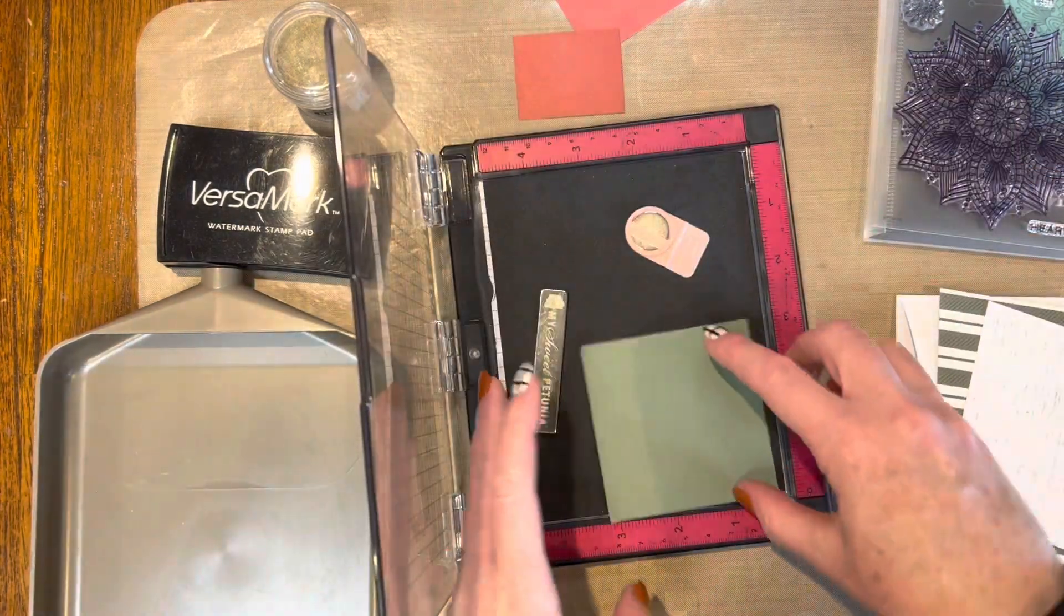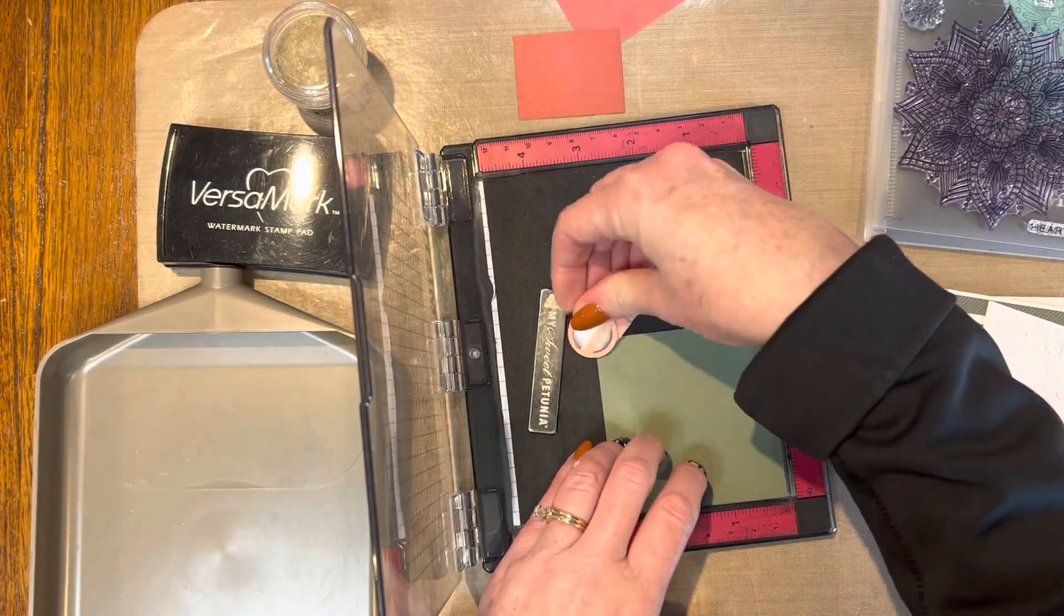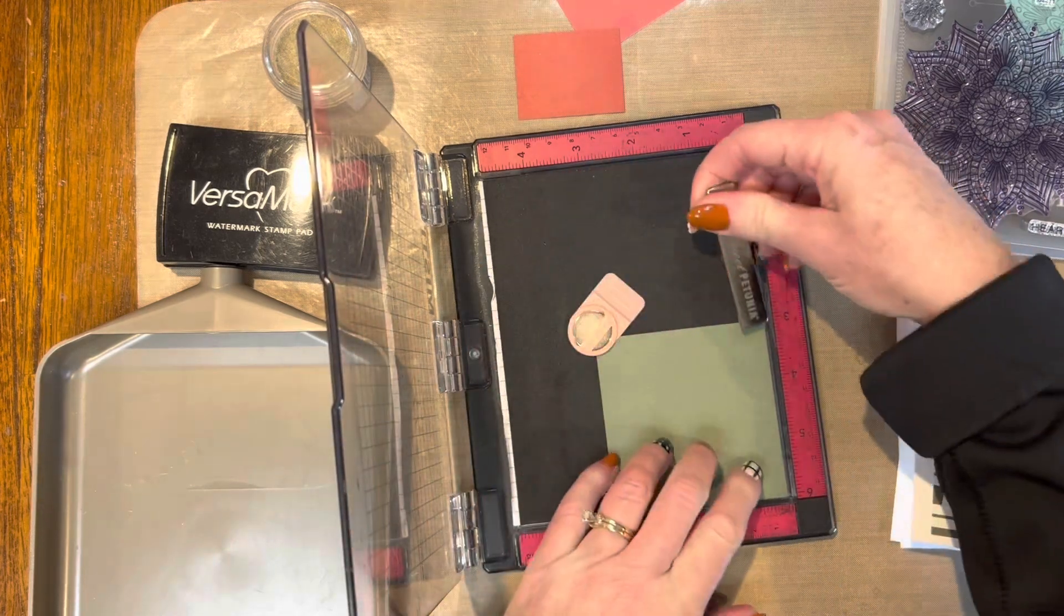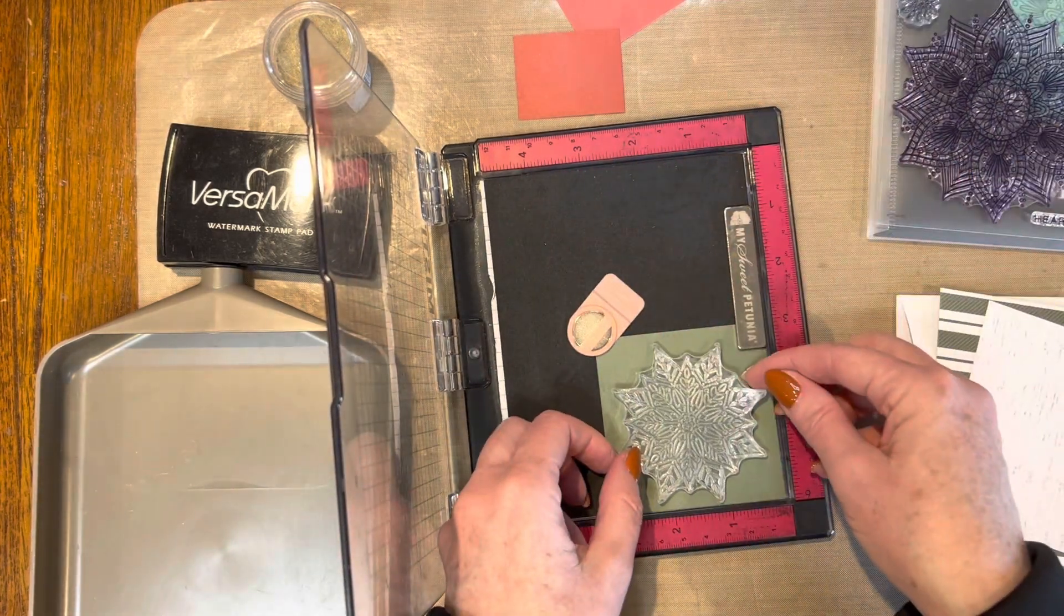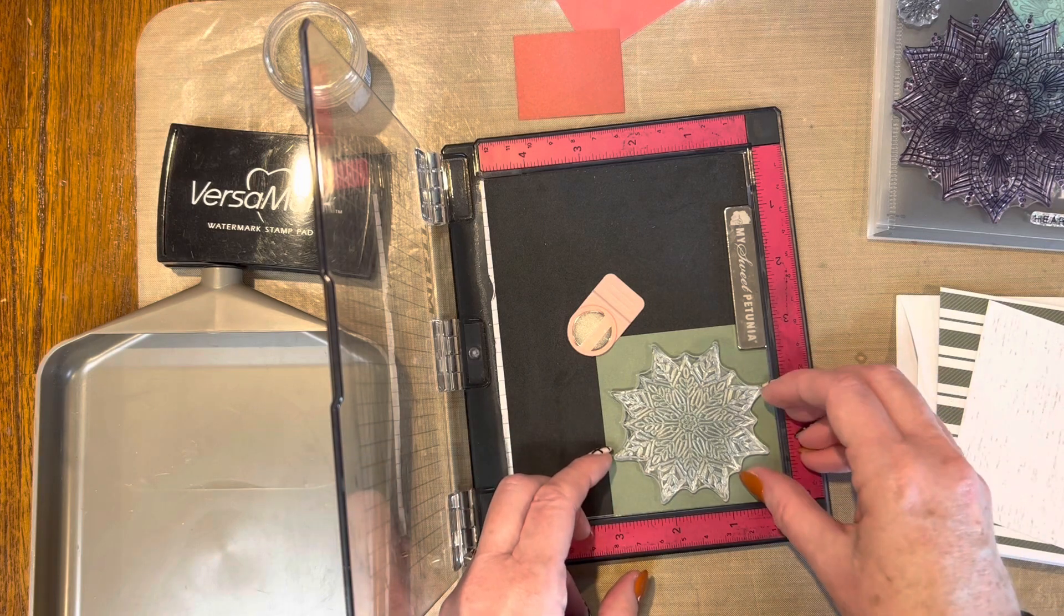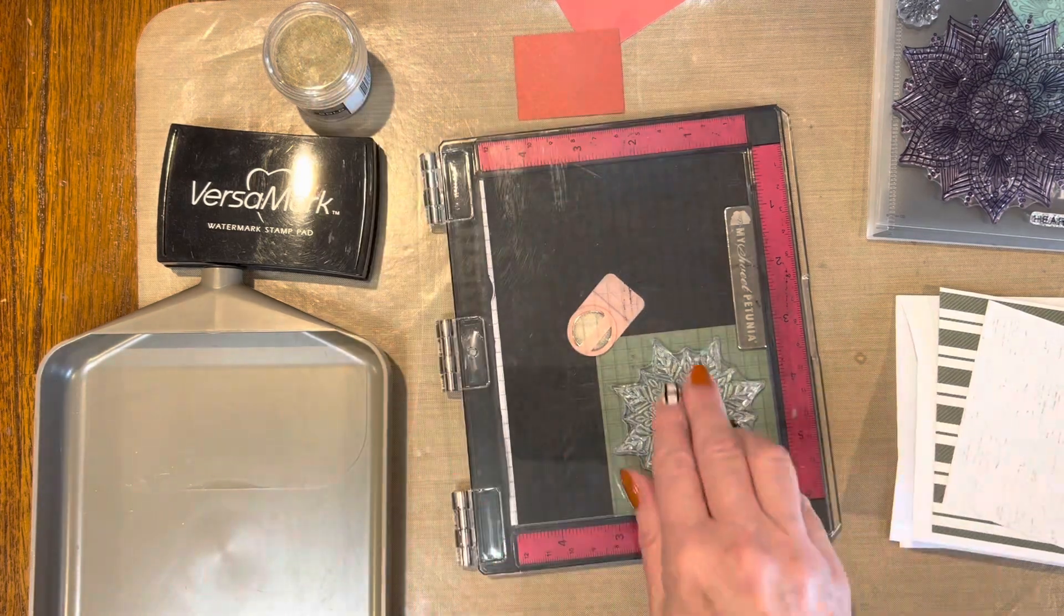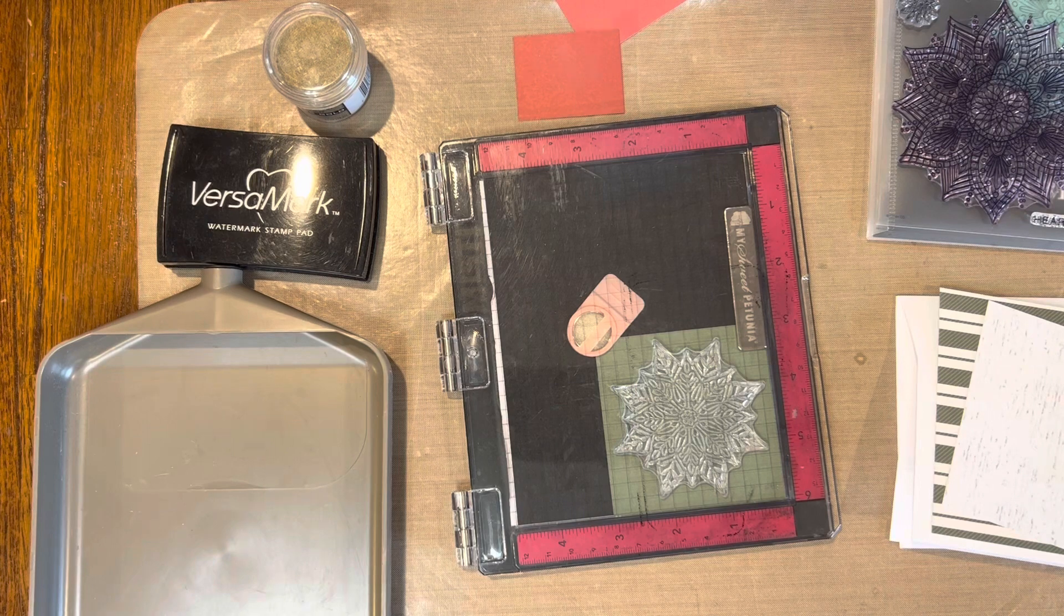I'm going to be stamping them with the medium and small Mandela snowflakes that are in this Christmas Snowflake Mandalas stamp set, and I'm using my Versamark ink to stamp them up.